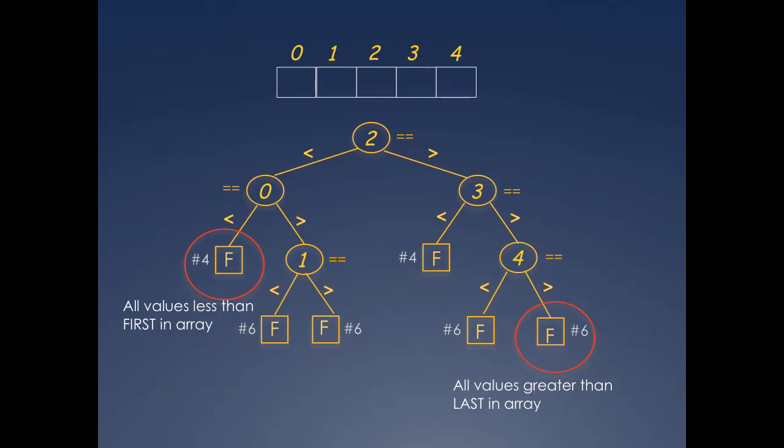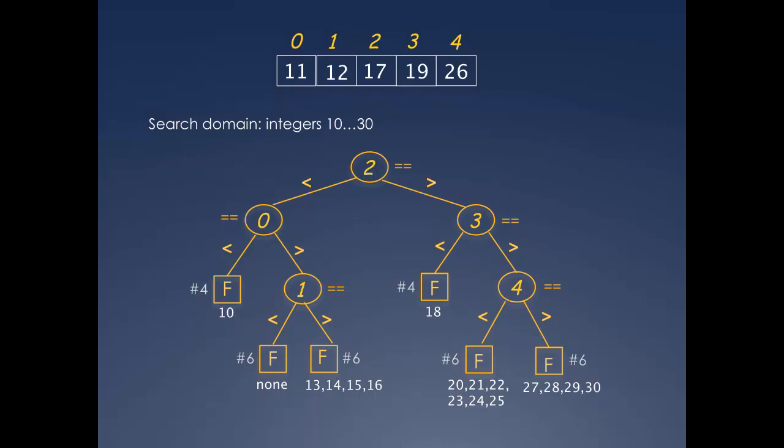The array now has values 11, 12, 17, 19, and 26, and the domain of searches is restricted to values between 10 and 30 inclusive. Under each failure node is listed all the values that it will catch. The leftmost node catches values less than 11, which is just 10. The failure node for values between the index 0 and index 1 of the array will catch nothing because there is no integer between 11 and 12, and so on.